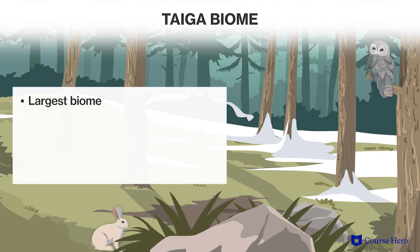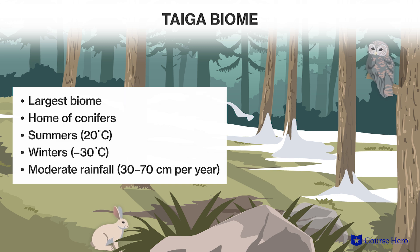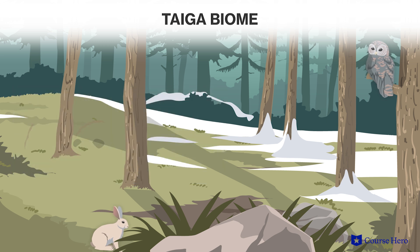The largest terrestrial biome on Earth is the taiga, or northern coniferous forest, where conifers grow. Conifers are cone-bearing trees that do not lose their leaves. This biome can be found in Alaska and northern Scandinavia. Taiga summers are warm with an average temperature of 20 degrees Celsius, and winters are long and cold with an average temperature of minus 30 degrees Celsius. Rainfall is generally moderate, with 30 to 70 centimeters of rain each year. Cone-bearing trees such as pines and spruces are the primary vegetation, and plant biodiversity is somewhat low.